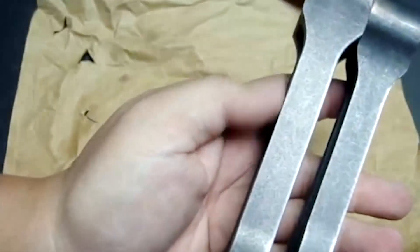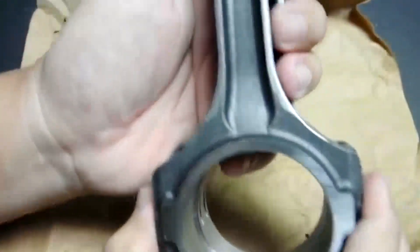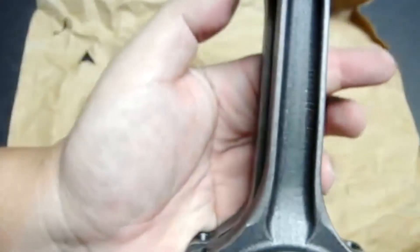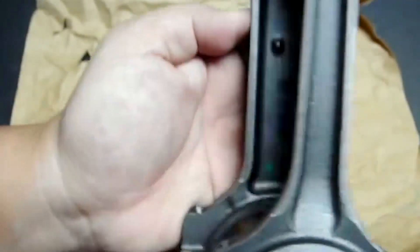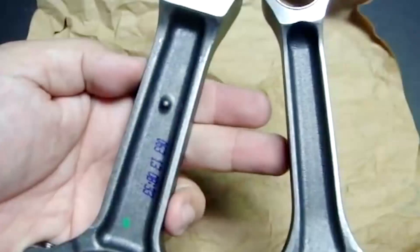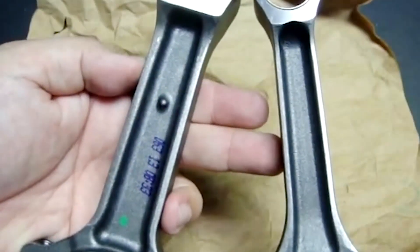As you can see, the LSA connecting rod has more material width. And also looking at it from this alignment, you can see that the LSA shank is wider than the naturally aspirated connecting rod.